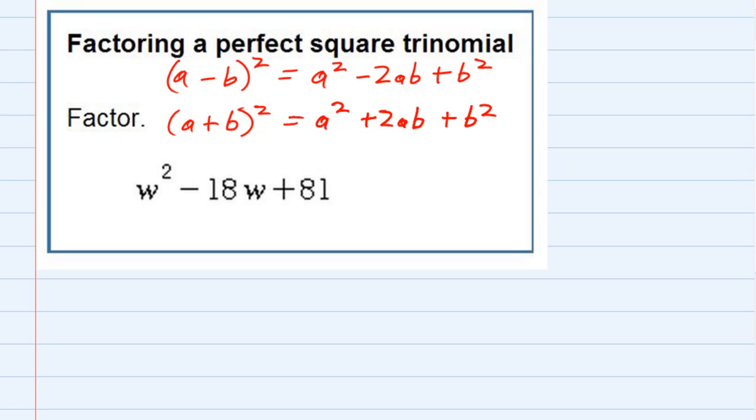But looking at this, we're actually going to be going in the other direction because we're factoring. So looking at the trinomial that they gave us, we have w², so the first term is something being squared, and the last term is 81, so that is 9 being squared.